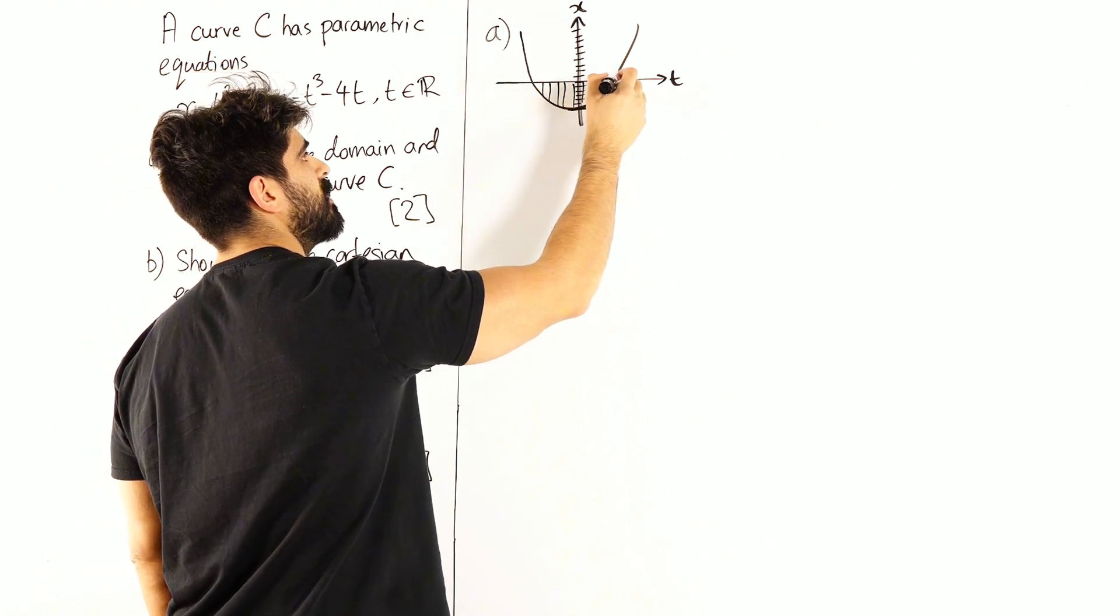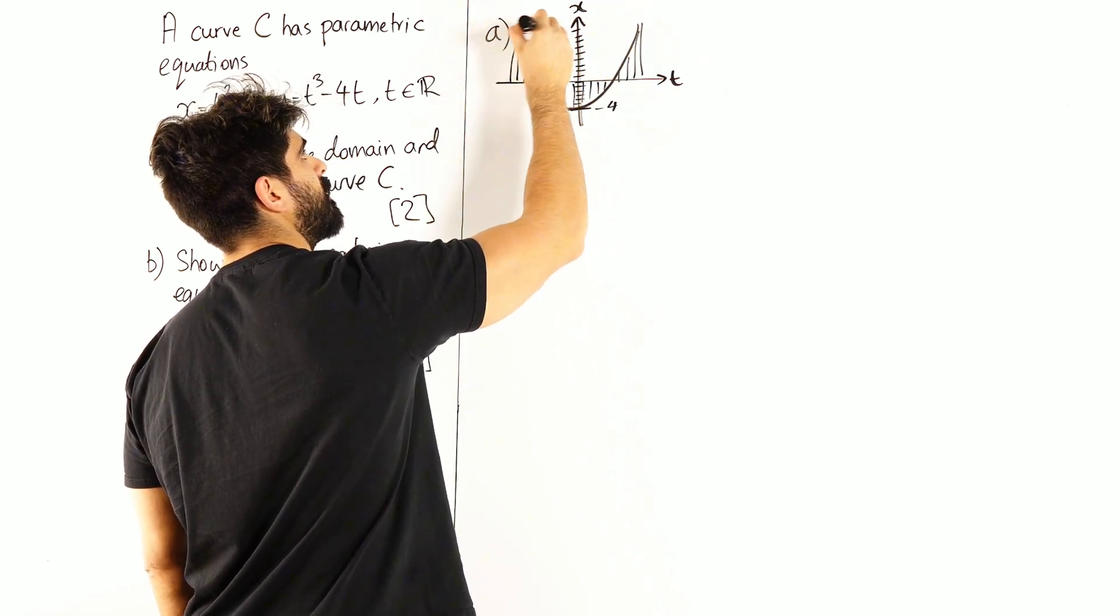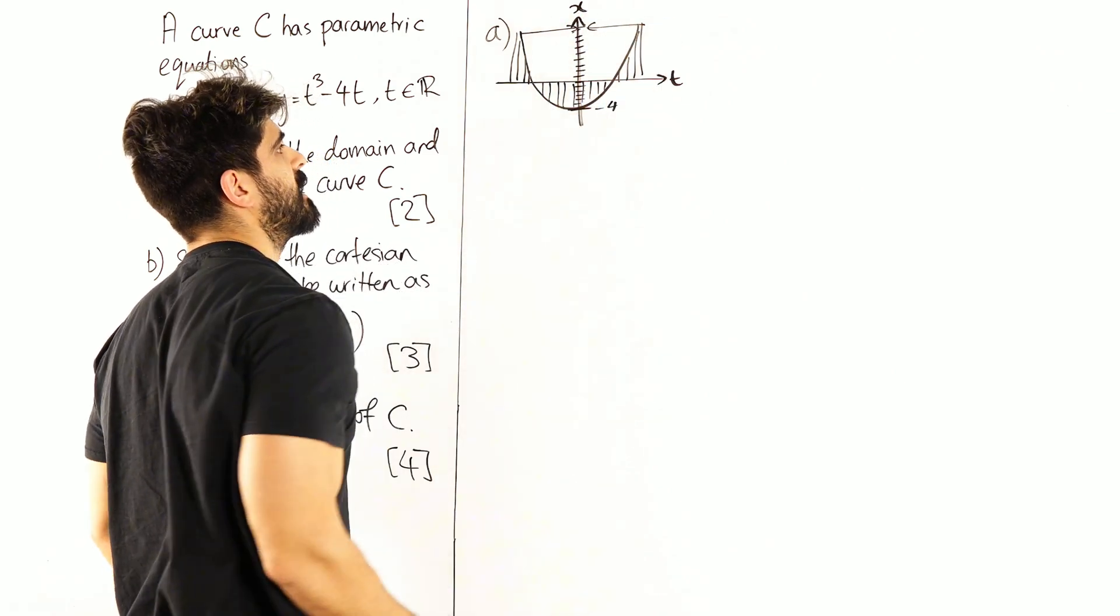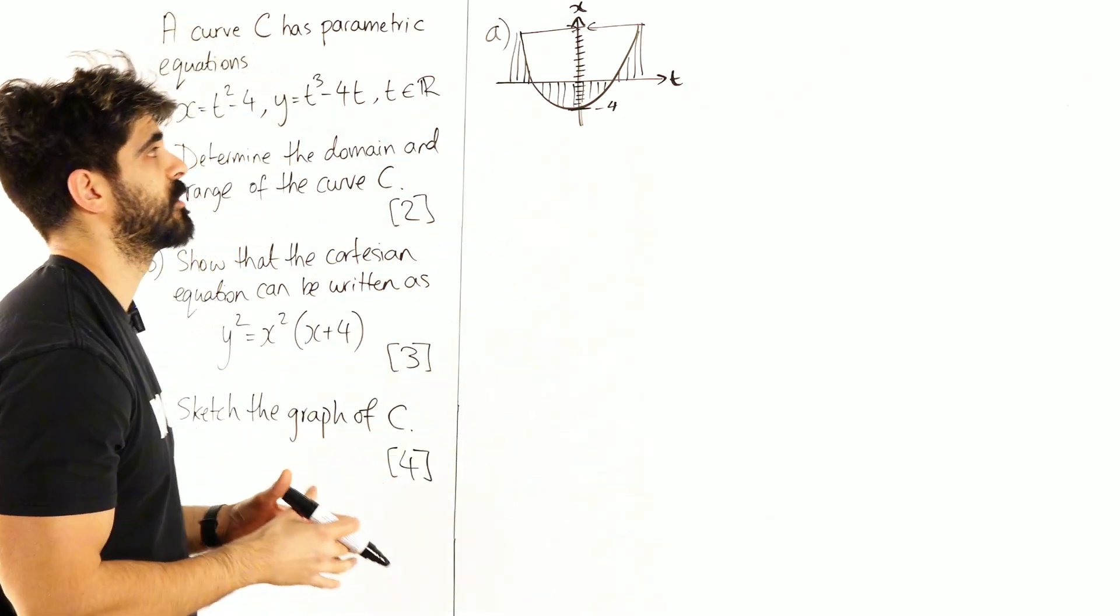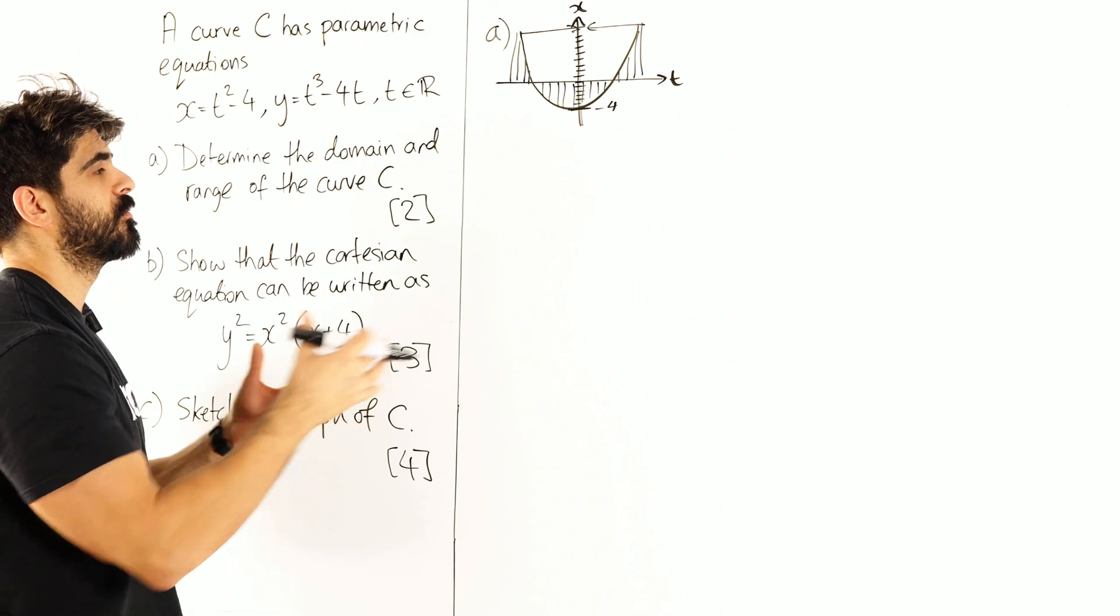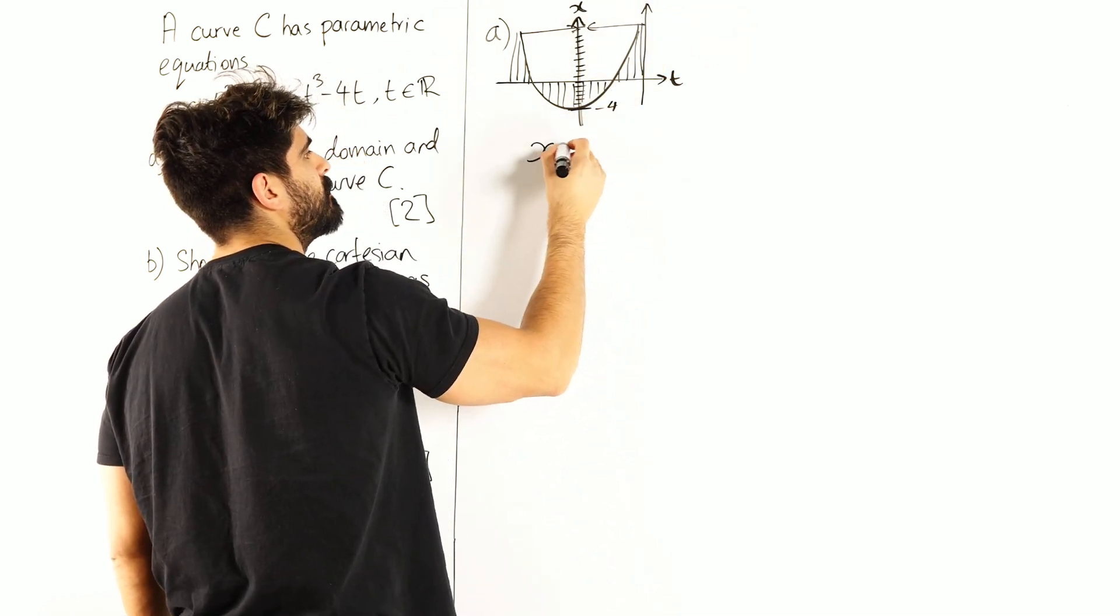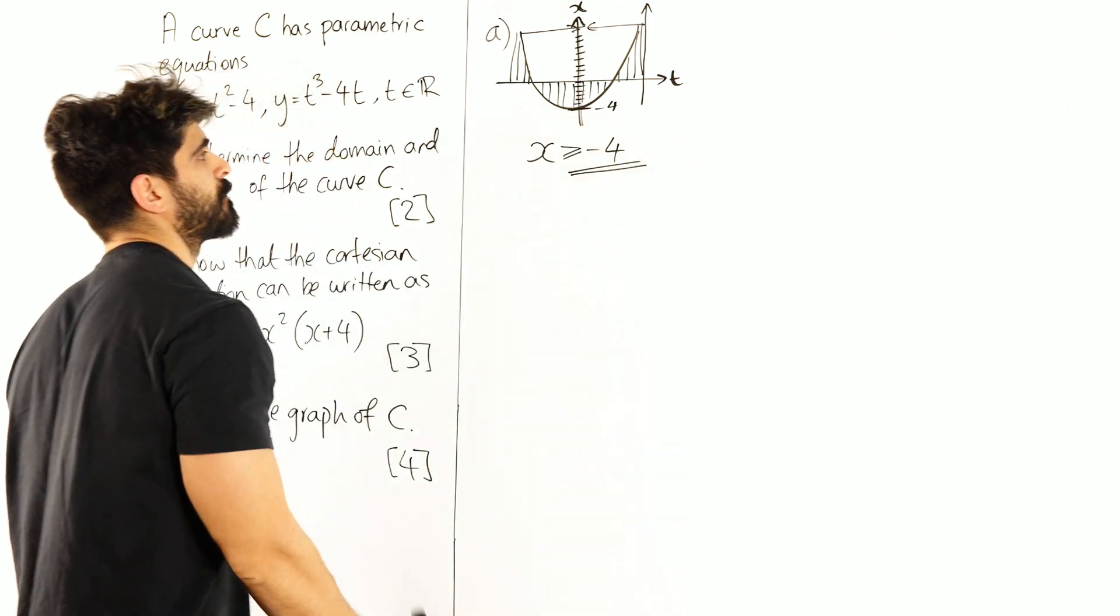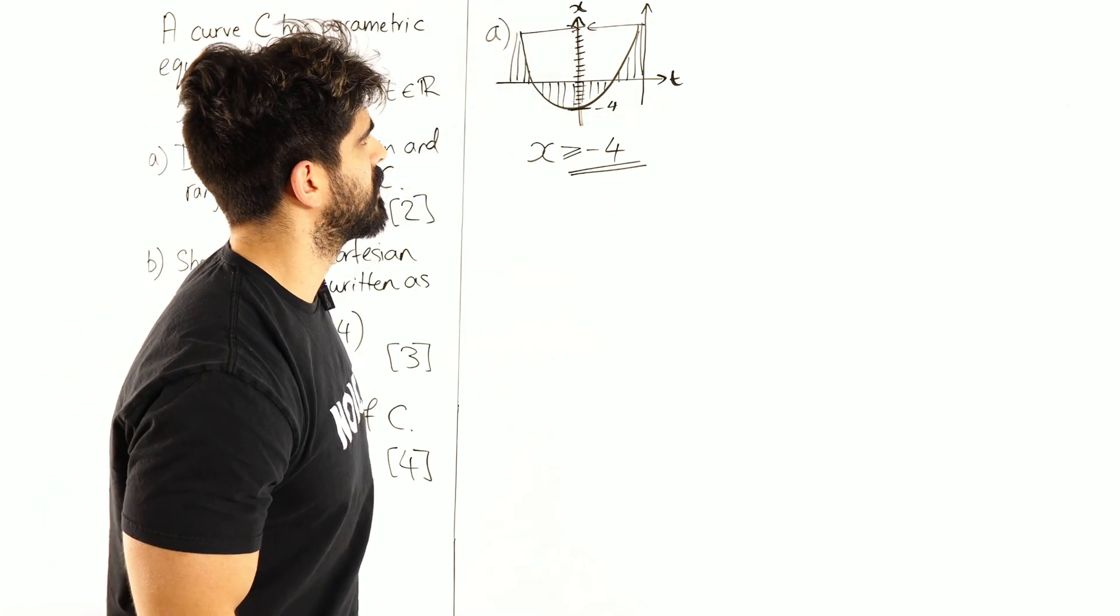So for all t values, the x values are defined. If you read across basically, it's defined for anything above minus 4. So actually what we're doing here is we're reading the range for both. So here x clearly can be anything more than minus 4. So all the x values are defined above minus 4.